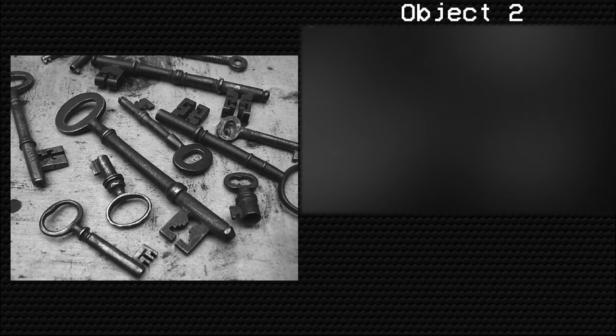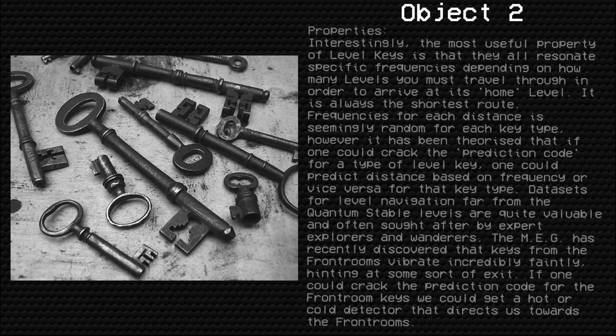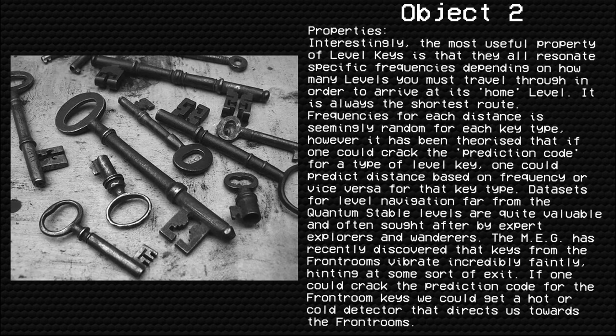Level keys function identically to front rooms keys, with a few quirks. Much of their inner workings are unknown and are still undergoing active research by the MEG. The most useful property of level keys is that they all resonate at specific frequencies depending on how many levels you must travel through to arrive at their home level — always the shortest route. Frequencies for each distance appear random per key type, though it has been theorized that cracking the prediction code could allow one to predict distance based on frequency, or vice versa.